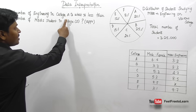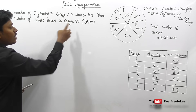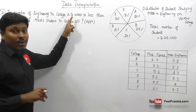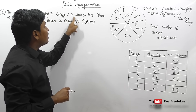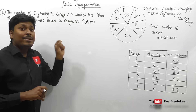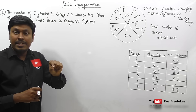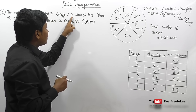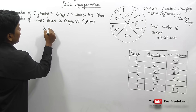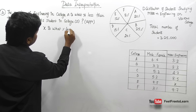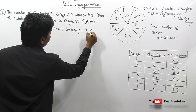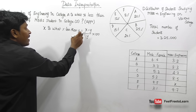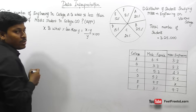Question 4: The number of engineering students in college A is what percentage less than the number of MBBS students in college D? When the question says 'x is what percentage less than y', use the formula: (x − y) / y × 100, where x is engineering students in college A and y is MBBS students in college D.